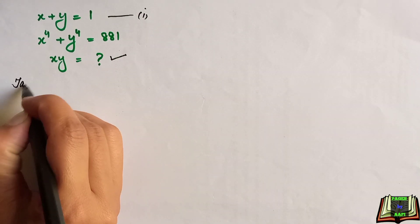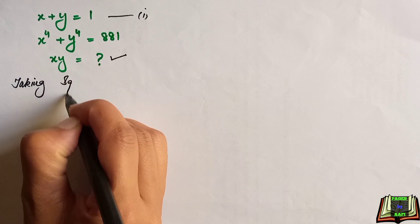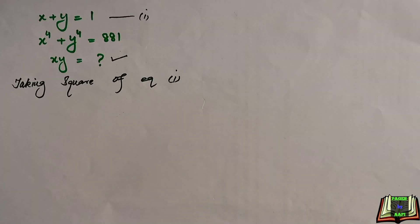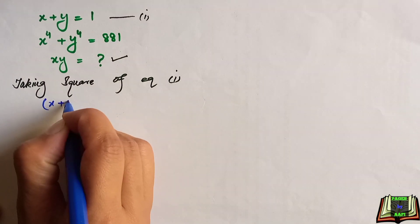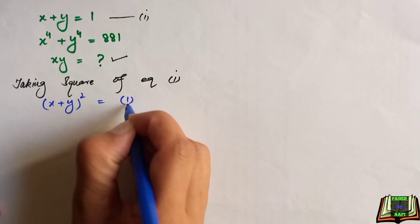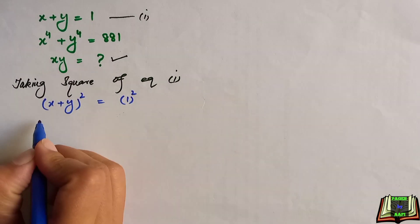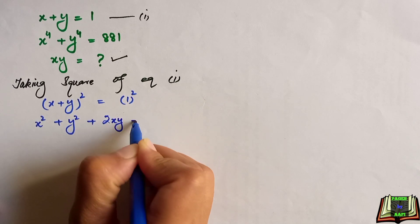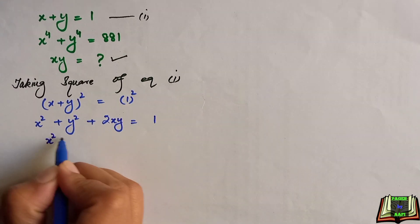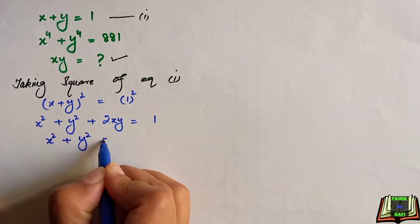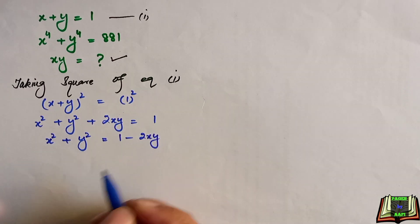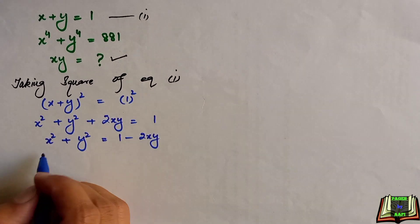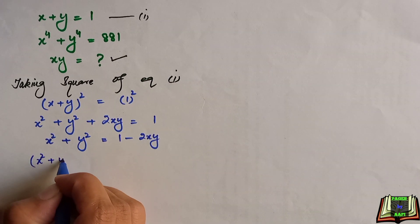In the first step we will take the square of equation 1 on both sides. We get x plus y whole square on the left hand side and 1 squared on the right hand side. Opening the square: x squared plus y squared plus 2xy equals 1. Taking 2xy to the right hand side gives us x squared plus y squared equals 1 minus 2xy.